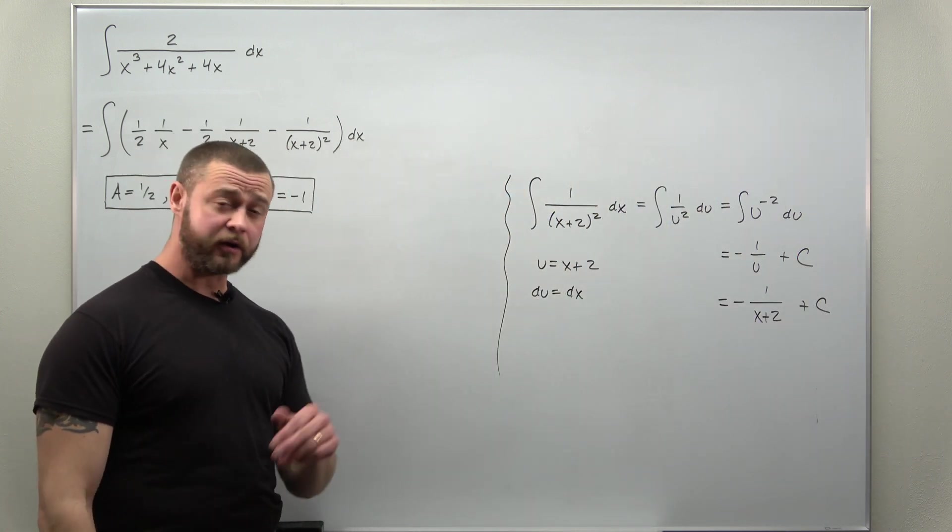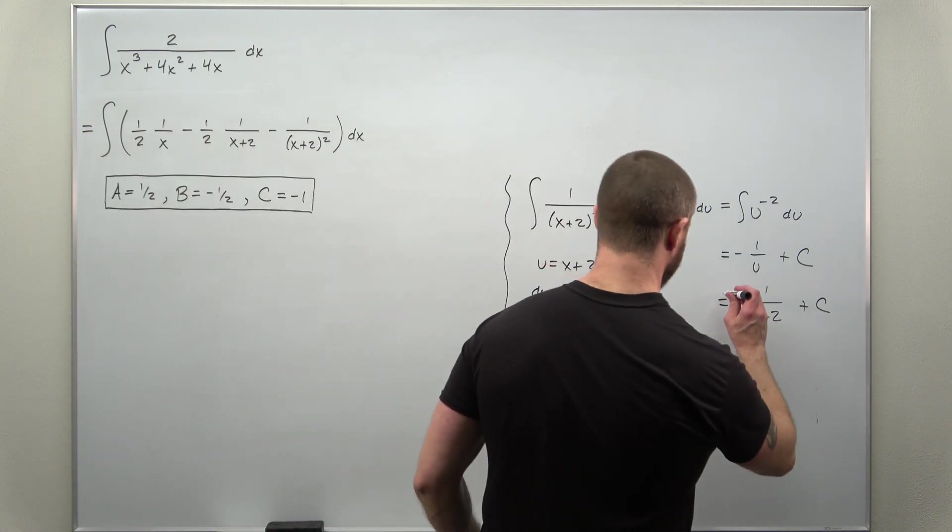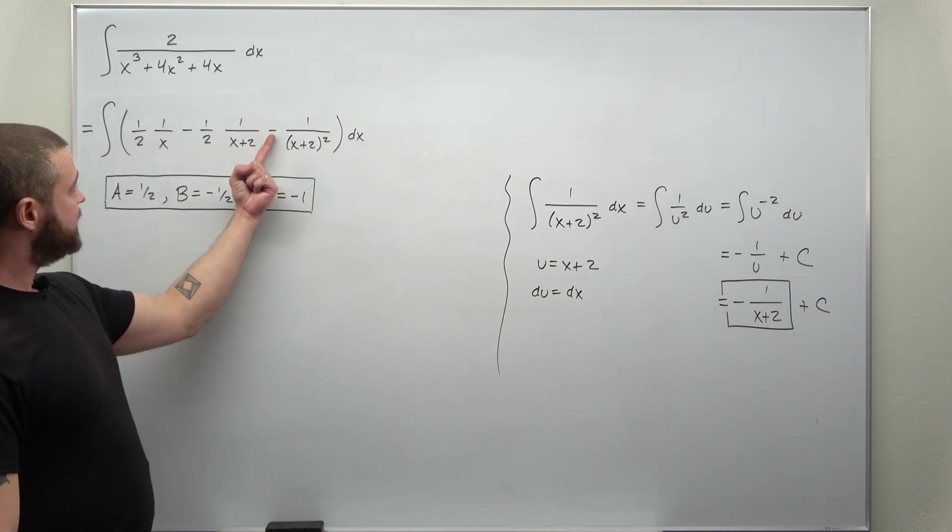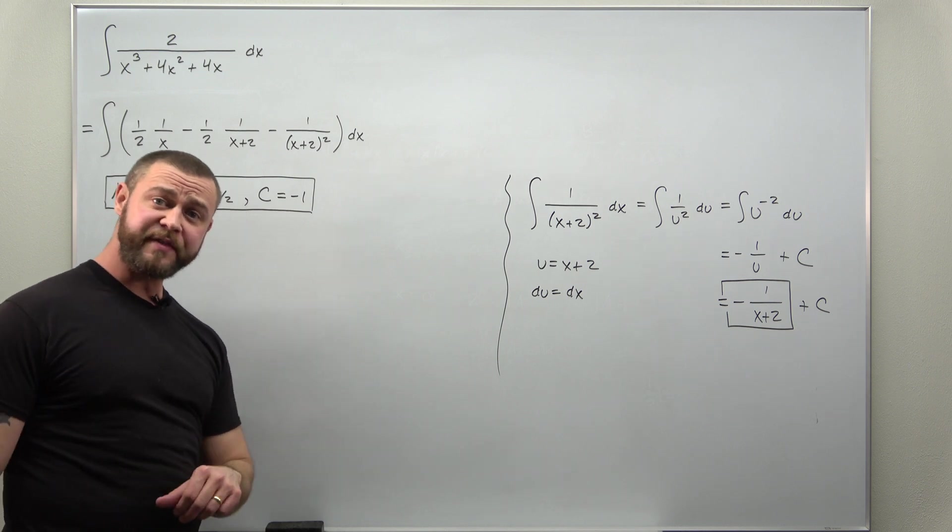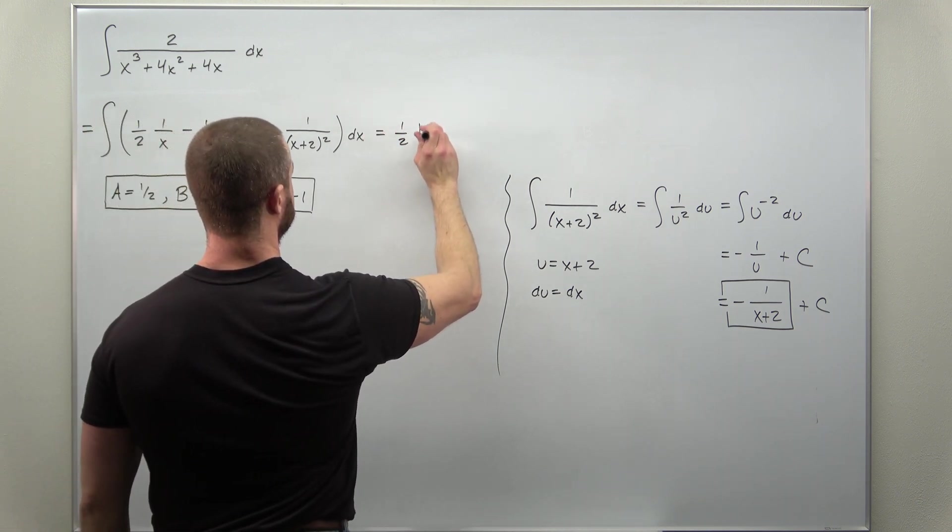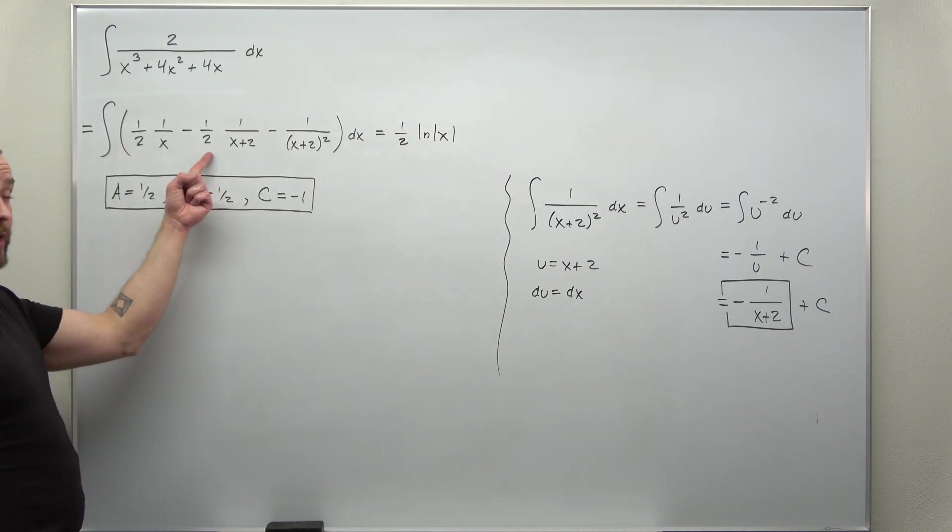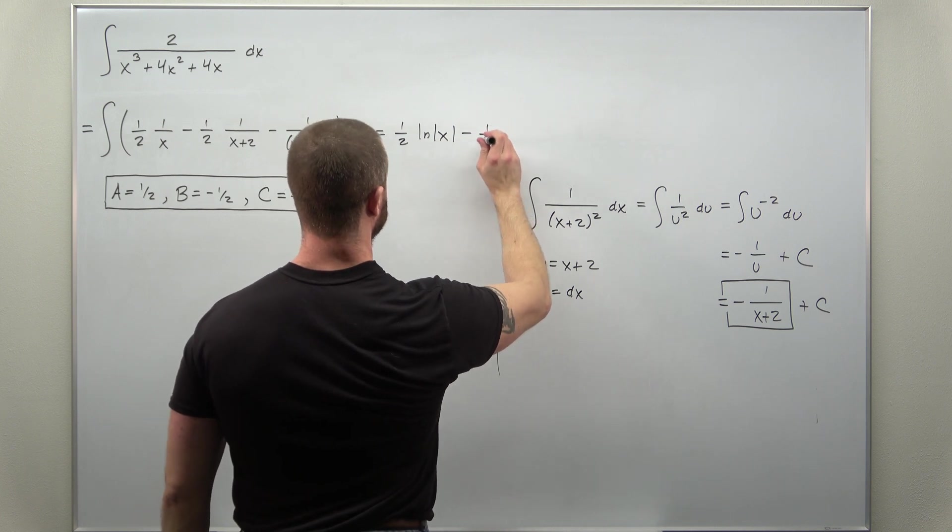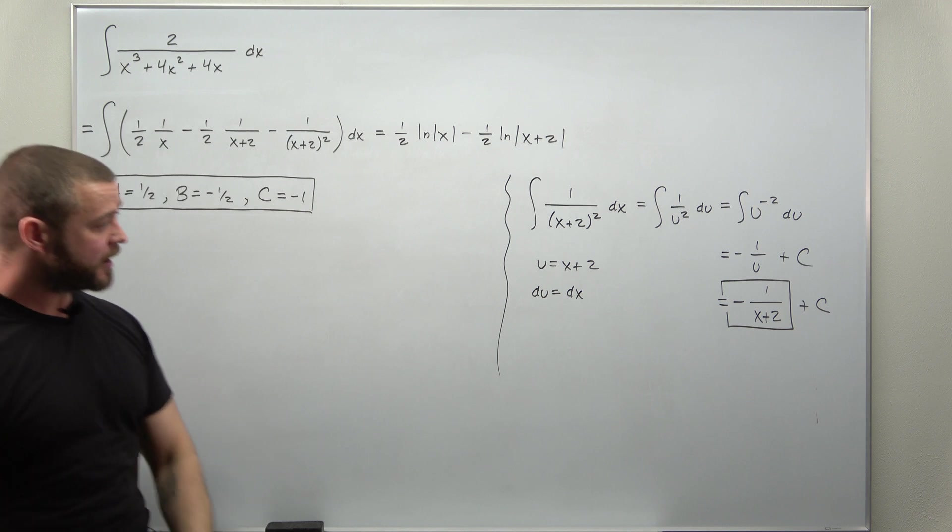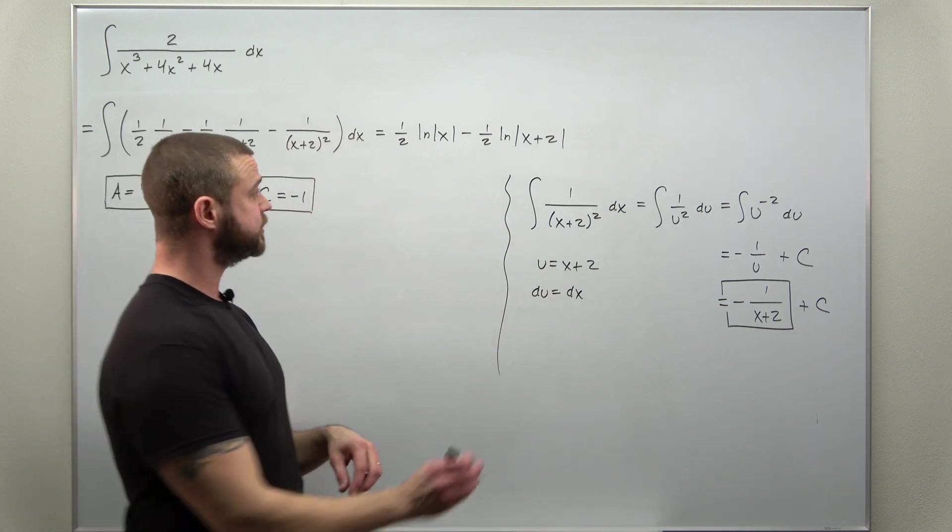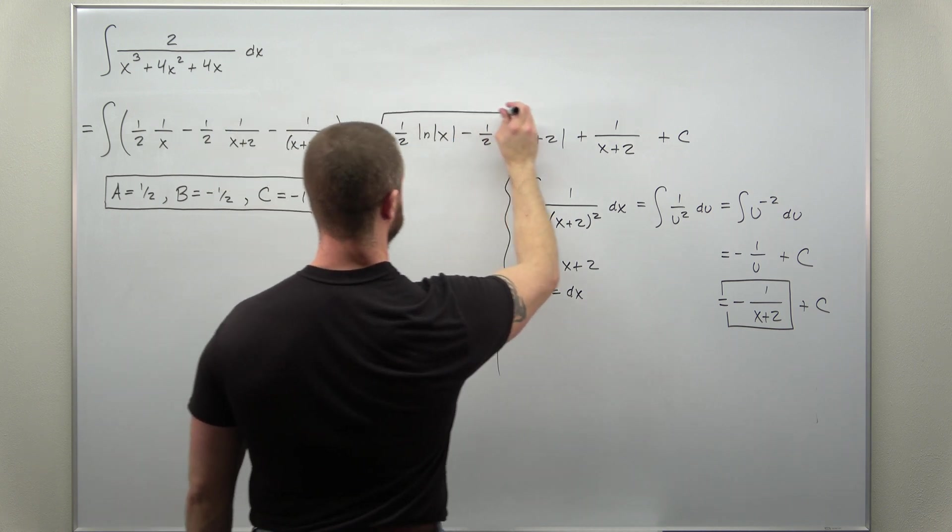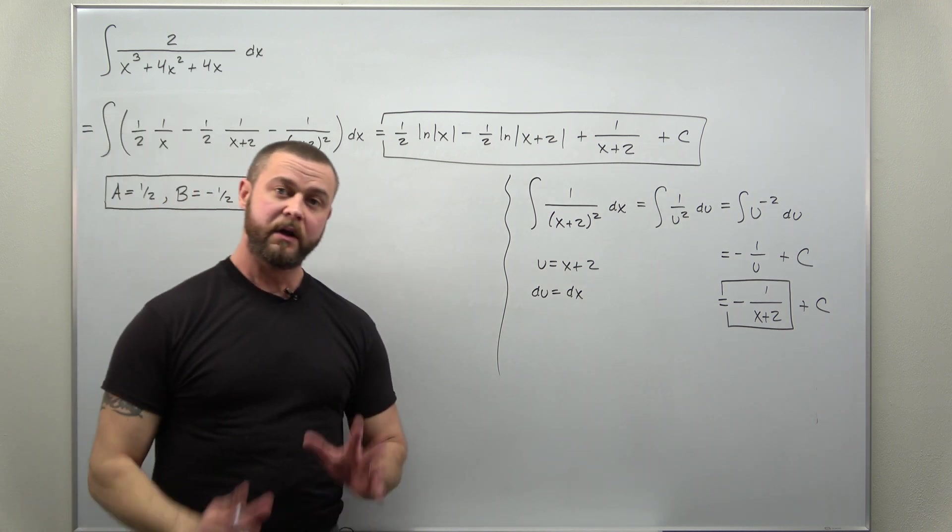Alright, that's the only tricky integral here. Just be careful when you plug that result back in. We just really need this part. We don't need the plus c. Be careful, there's a negative in front. And there's a negative right there. So, if we make use of that integral, term by term, the first one will integrate to 1 half natural log of x. The next term we get minus 1 half natural log of x plus 2. And our last integral, there's a minus, but our anti-derivative has a minus. So that'll change to plus 1 over x plus 2. And don't forget your plus c.